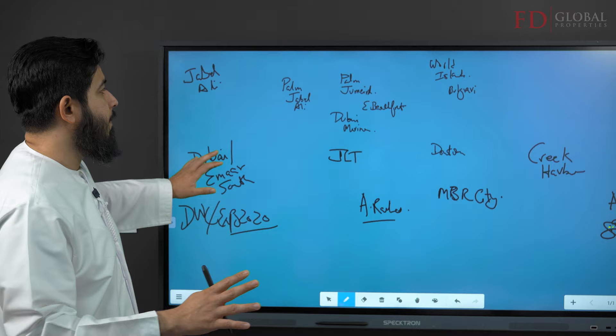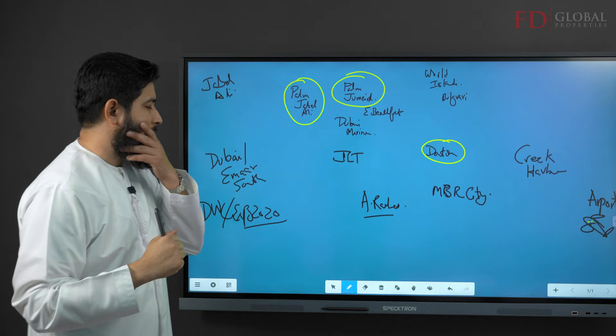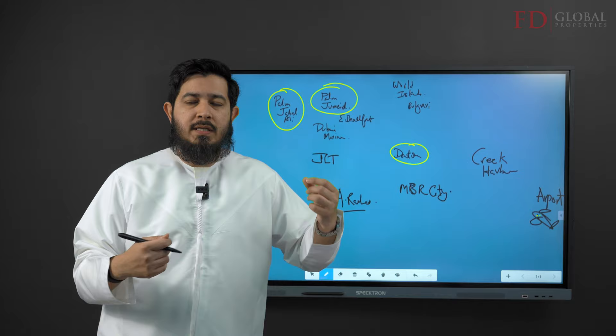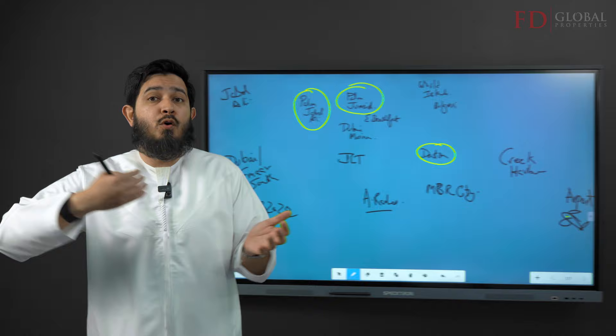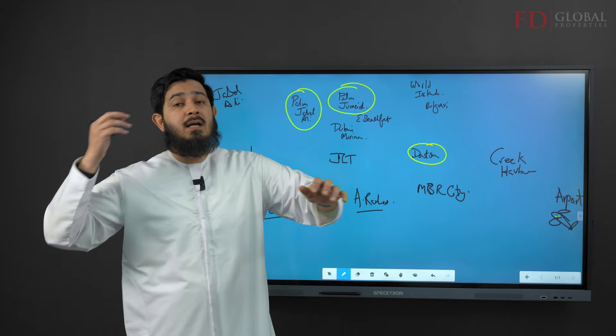Now on the actual map, you can see Palm Jabal Ali, Palm Jumeirah, and Downtown as previously mentioned. I'm going to start talking about each of these major communities in Dubai so you get an idea of what is where. I'll start from about 40 years ago — what was already there before Dubai opened up its real estate market in 2002–2003.